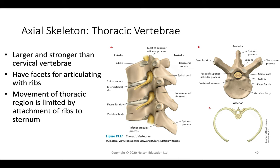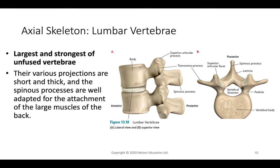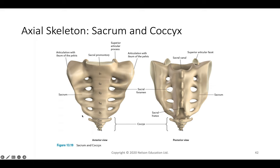The thoracic vertebrae are stronger than cervical but not as strong as lumbar. They have rib articulating facets that line up with the ribs, and their range of motion is limited because the ribs attach to the sternum in front. The lumbar vertebrae are the largest and strongest of the unfused vertebrae, with large projections serving as attachment points for the lower back muscles. The sacrum articulates with the ilium of the pelvis, and the coccyx is the fused tailbone.